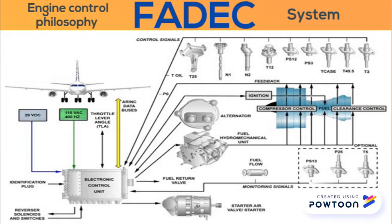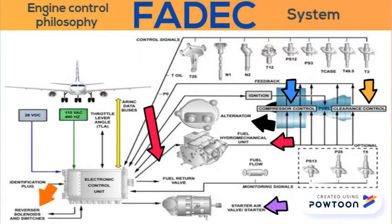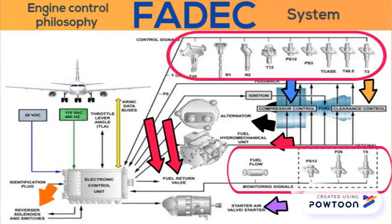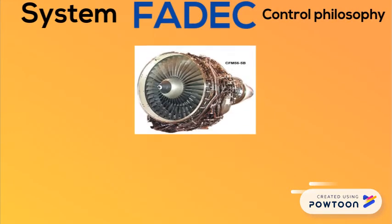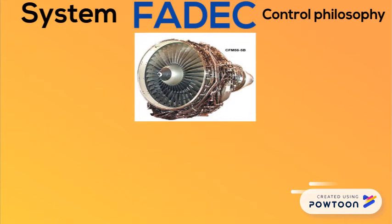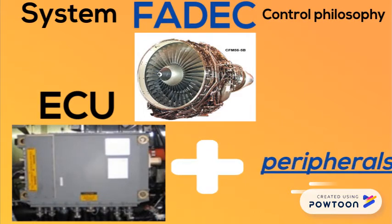The FADEC system has a dual-channel ECU and the following peripherals: the hydromechanical unit, dedicated FADEC alternator, compressor control systems, clearance control systems, start system, thrust reverser system, oil fuel temperature control system, fuel return valve, engine sensors, and electrical harnesses. The FADEC system is a philosophy for controlling the engine. The FADEC is equal to the electronic control unit or engine computer plus the mentioned peripherals.